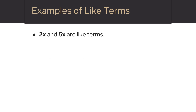2x and 5x are like terms because they both are x terms. 2 and 5x are not like terms — 2 is a number and 5x is an x term.